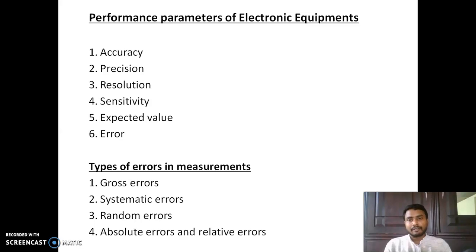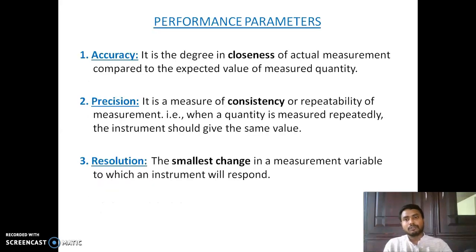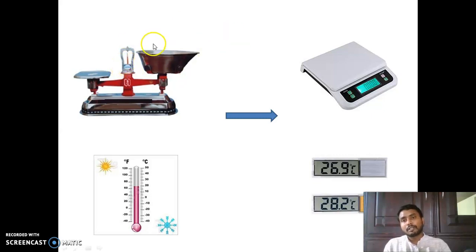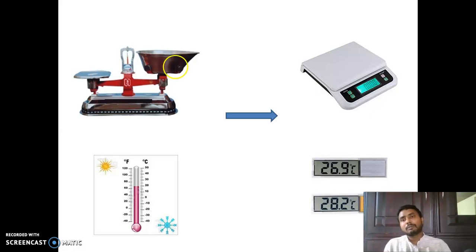When we were discussing about error, I told you what error is. We have an expected value — for example, if I am using this machine to measure one kilogram weight, the expected value is one kilogram, that is one thousand grams. But the accuracy is less; it may become one thousand and ten grams, or nine hundred and ninety-five grams.